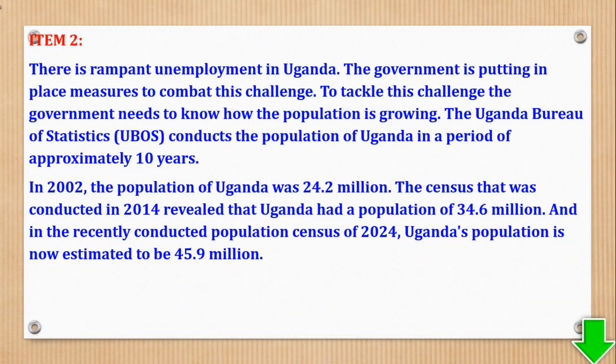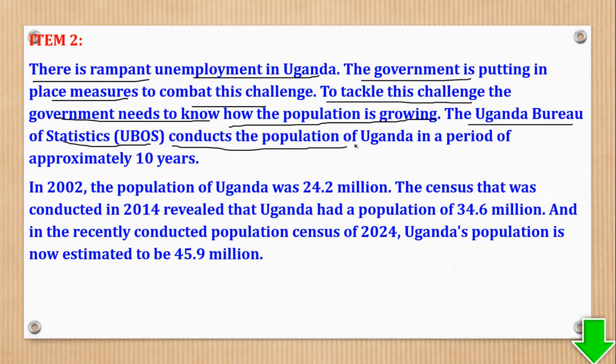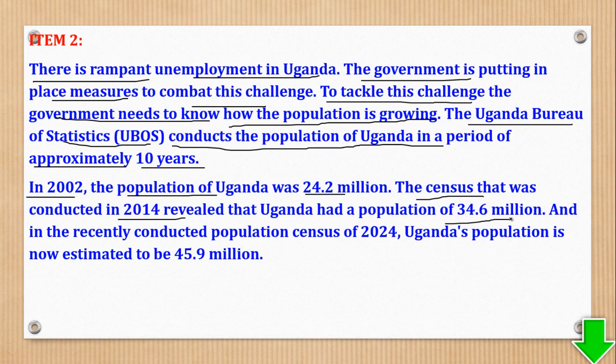Item 2 says there is rapid unemployment in Uganda, and the government needs to know how the population is growing. The Uganda Bureau of Statistics conducts the population census approximately every 10 years. In 2002 the population was 24.2 million, in 2014 it was 34.6 million, and in 2024 it is now 45.9 million.